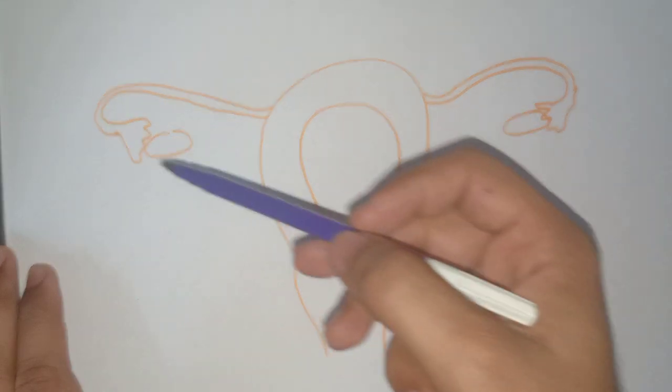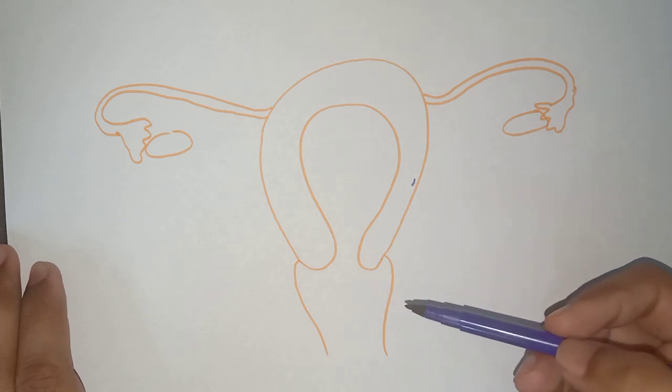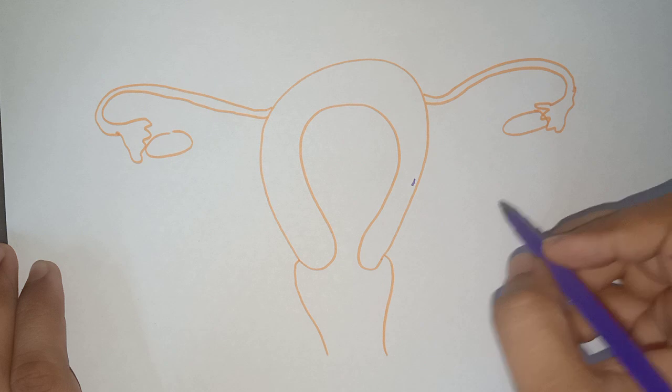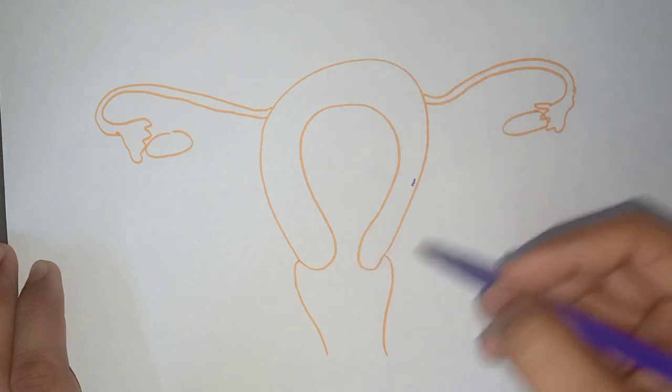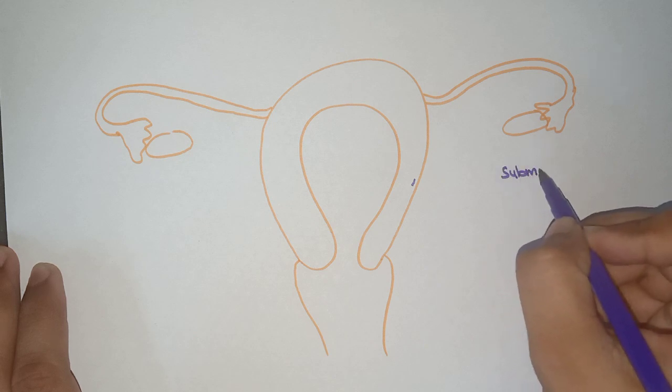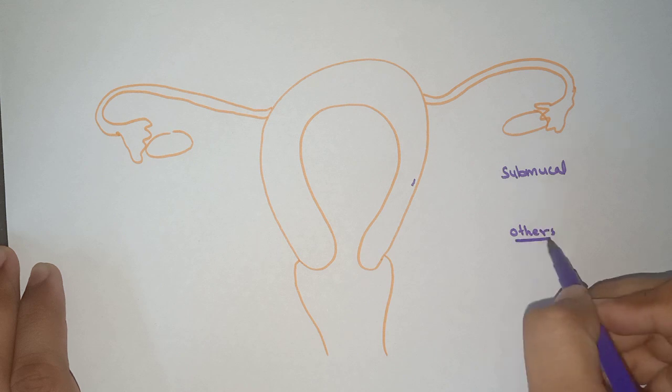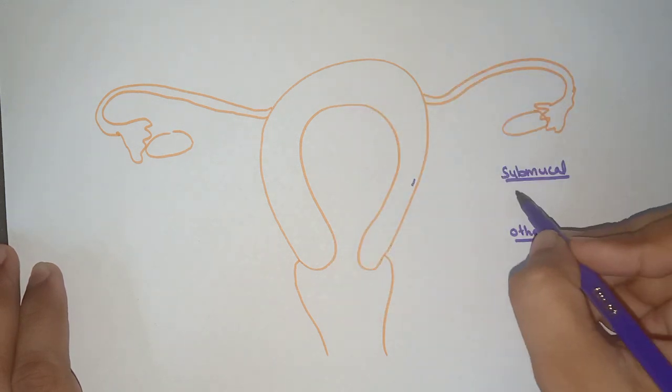this is the cervix, these are the fallopian tubes, these are the fimbriae, and these are the ovaries. We have divided all fibroids on the basis of submucosal and others. Now we have classified them